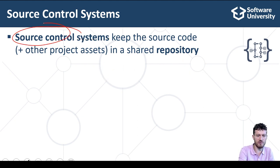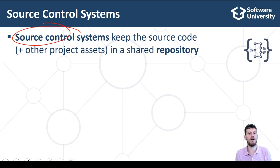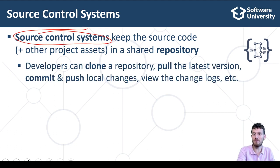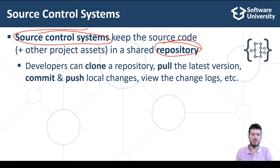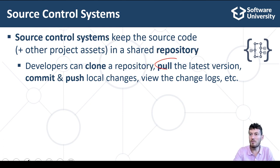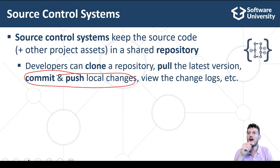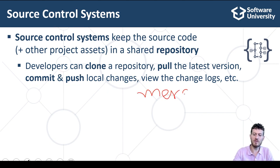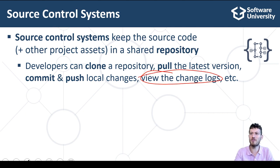Source control or version control is a concept of software engineering used every day by millions of developers. Source control systems keep the source code and other project assets in a shared repository available through the internet or in a local environment. Developers can clone a repository, pull the latest version of the code, commit and push local changes, and merge conflicting changes and collaborate with other developers. They can also view the change logs, project history, compare different versions of the same file and restore previous versions.